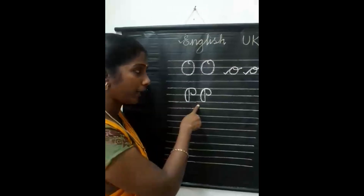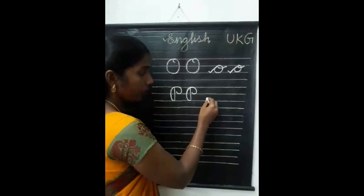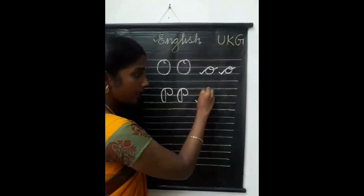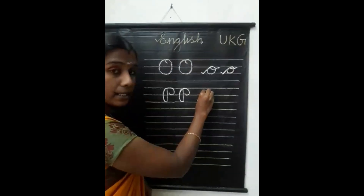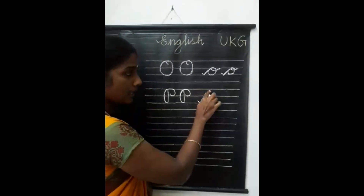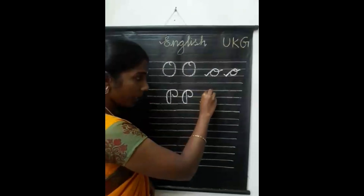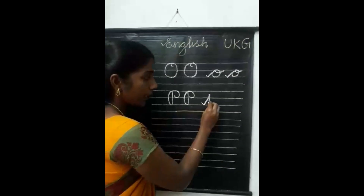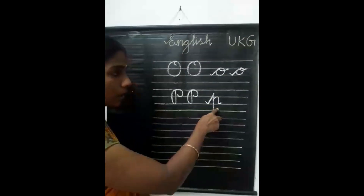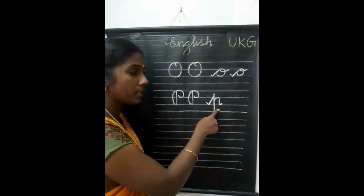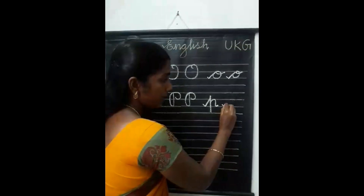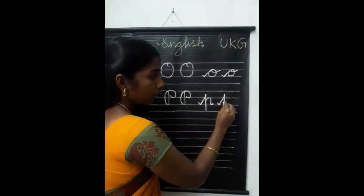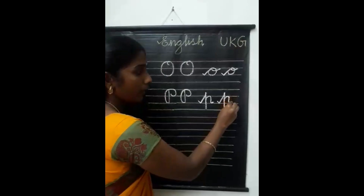Capital letter P. Then small letter P. From the third line you write a right slant line — stop here. This right slant line should not touch the first line. From here you write a standing line, touch the fourth line, then you write a downward curve. Now you will get small letter P.